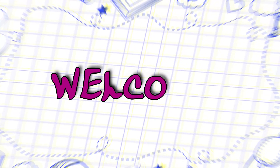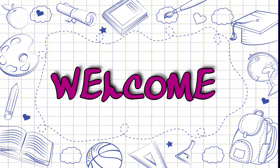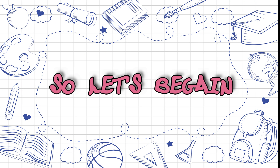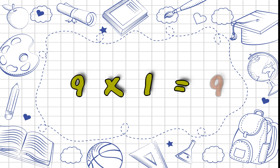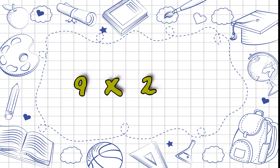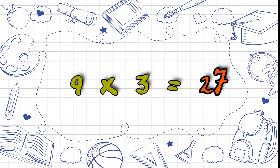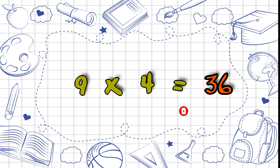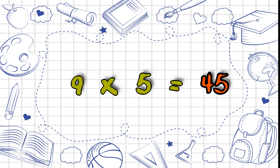Hello children, welcome back to my channel. Today we're going to learn the table of 9, so let's begin. 9 1 is 9, 9 2 is 18, 9 3 is 27, 9 4 is 36, 9 5 is 45.